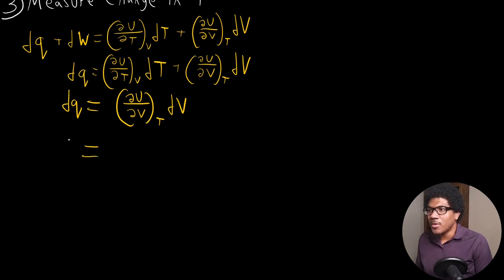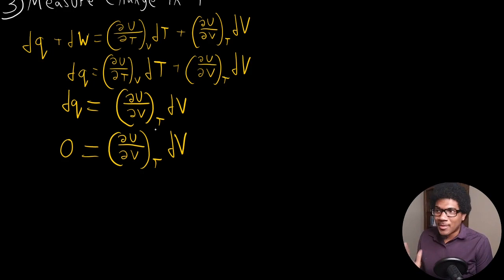So now we can go back down here and we know that dQ is going to be equal to zero. So we know that this whole thing on the right-hand side, this internal pressure term, it's just zero. So since he measured no temperature change, that term went away. Since he knew he was doing a free expansion, this term went away.